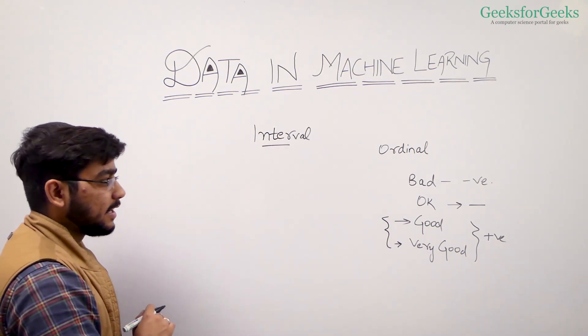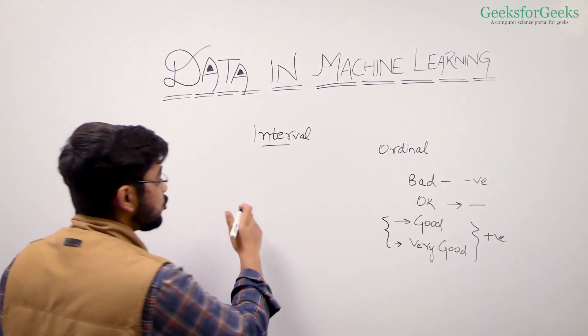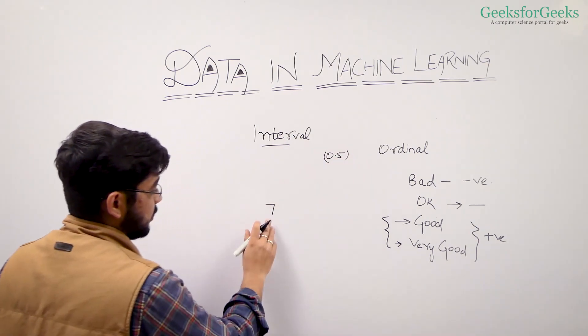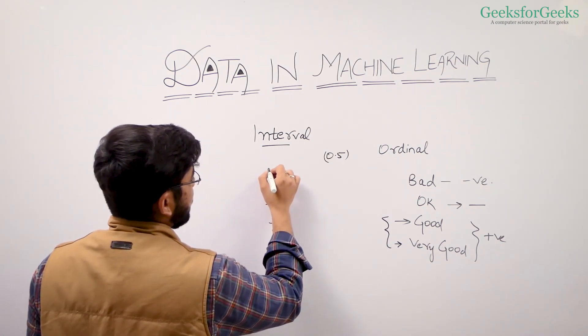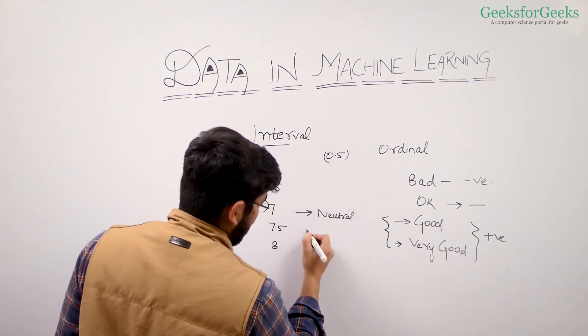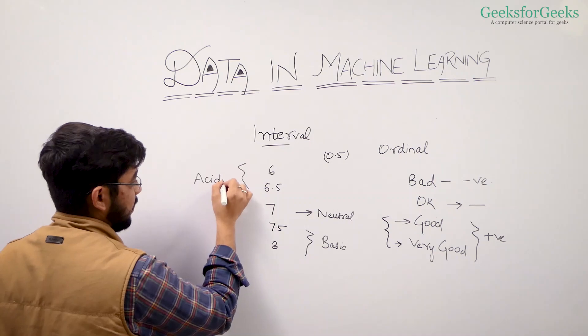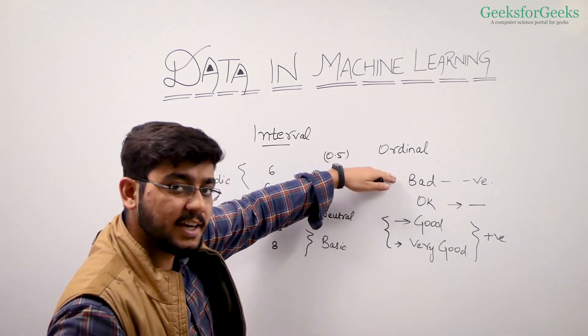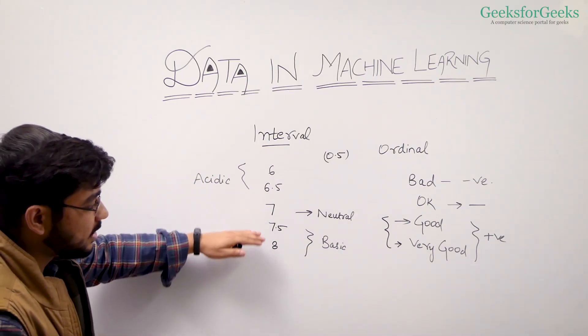But in case of interval data, we have natural ordering but with a known difference gap. Let's talk about pH values. So 7, and let's take a scale of 0.5: 7, 7.5, 8, 6.5, 6. We know that this is neutral value, that's basic, that's basic, and that's acidic. Less than 7 we are going towards acidic. More than 7 we are going towards basic behavior.